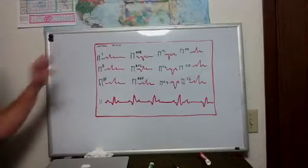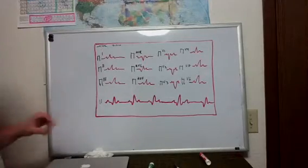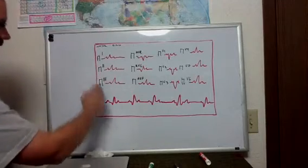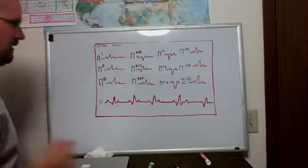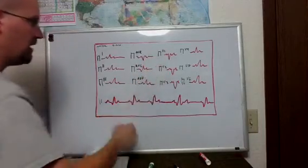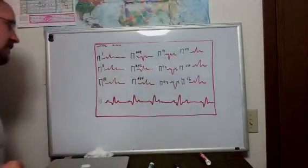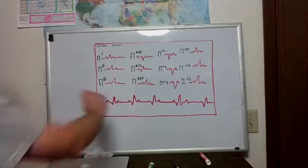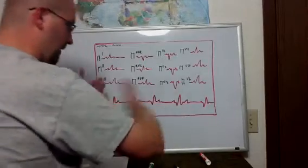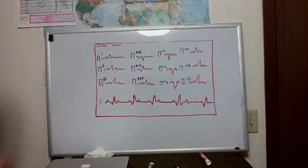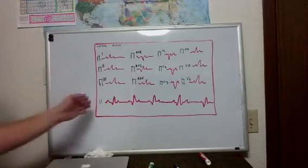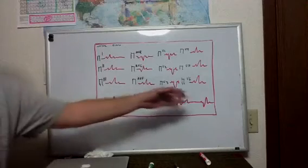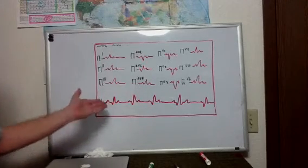Generally what will happen is you'll have your 12 leads, and they'll be arranged in this kind of order. You'll start at lead 1, 2, 3, AVR, AVL, AVF, V1, V2, V3, V4, V5, and V6, all 12 leads. And then a lot of the 12 leads at the very bottom, underneath all the 12 leads, it'll give you a long rhythm strip. A lot of your monitors, you can choose whatever you want the strip to be. Often you'll see something like lead 1 or lead 2. In this case, I just put lead 2.